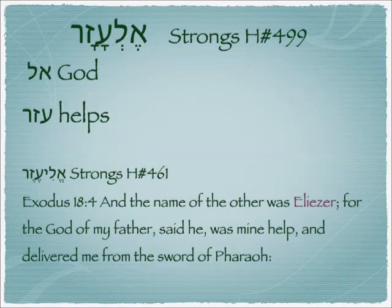The third son, Elazar, is made up of two names: El, which is God, and Azar, which means help. There are many other Eliazars — which is the same name — in the Bible, including Moses's own son, as in Exodus 18:4: 'And the name of the other was Eliazar, for the God of my father, he said, was my help and delivered me from the sword of Pharaoh.' So we have two first cousins, Elazar and Eliazar.